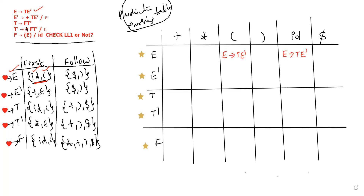The second production is E-dash. E-dash tends to plus T E-dash. Next one is epsilon.